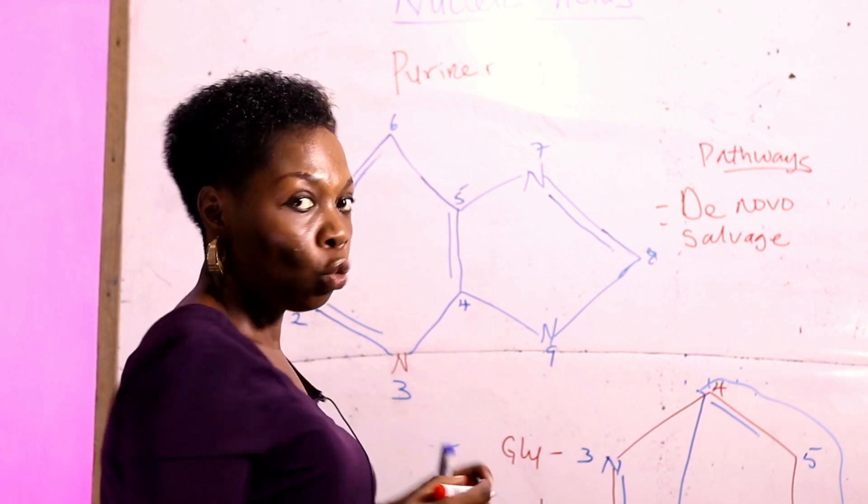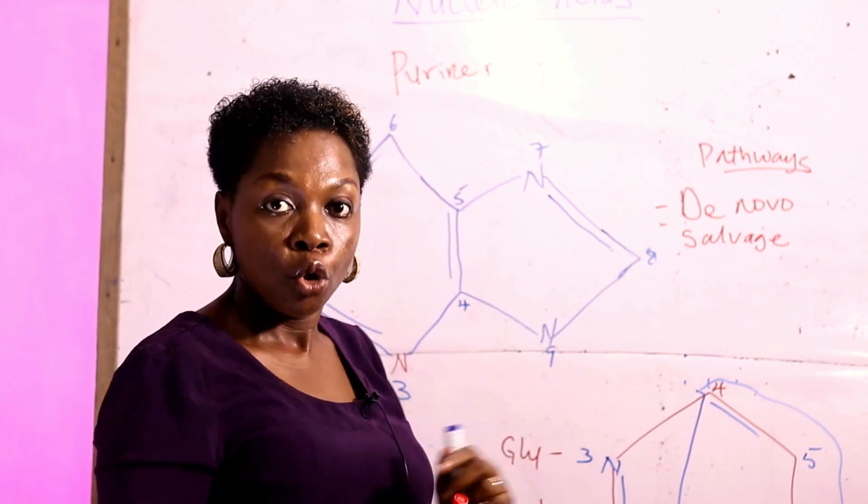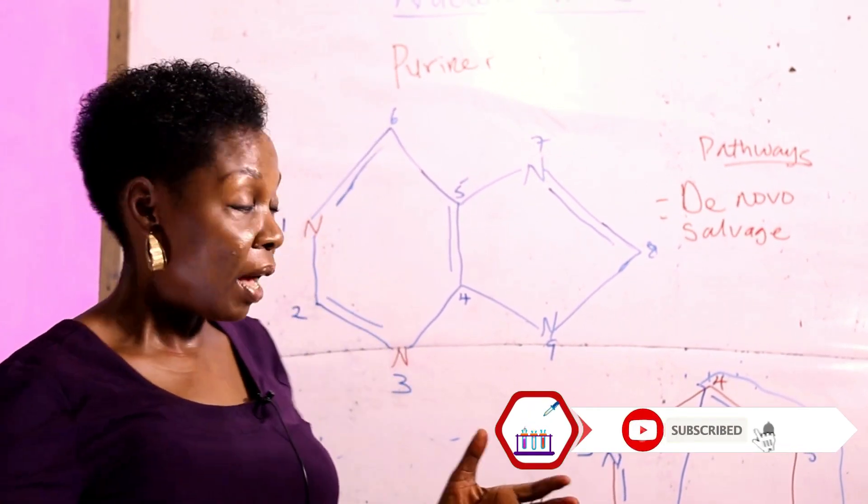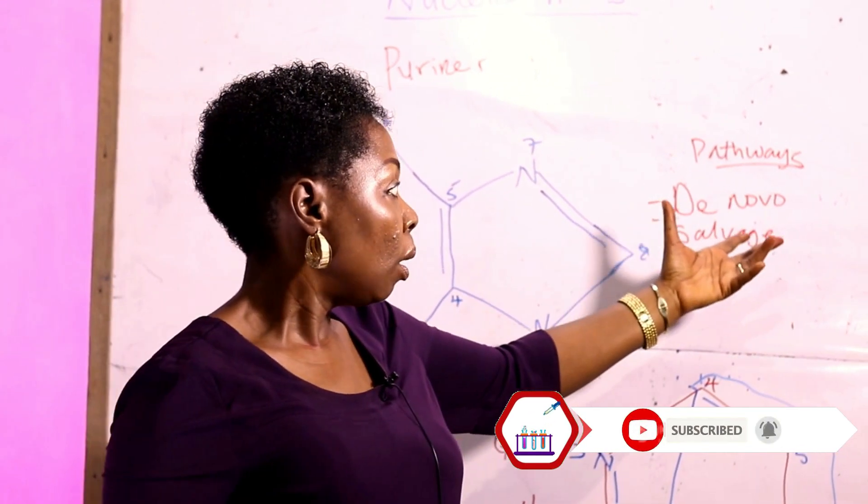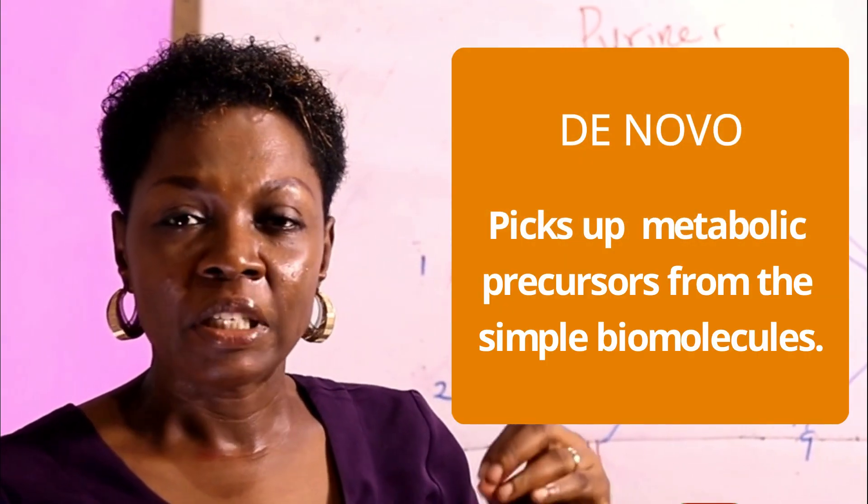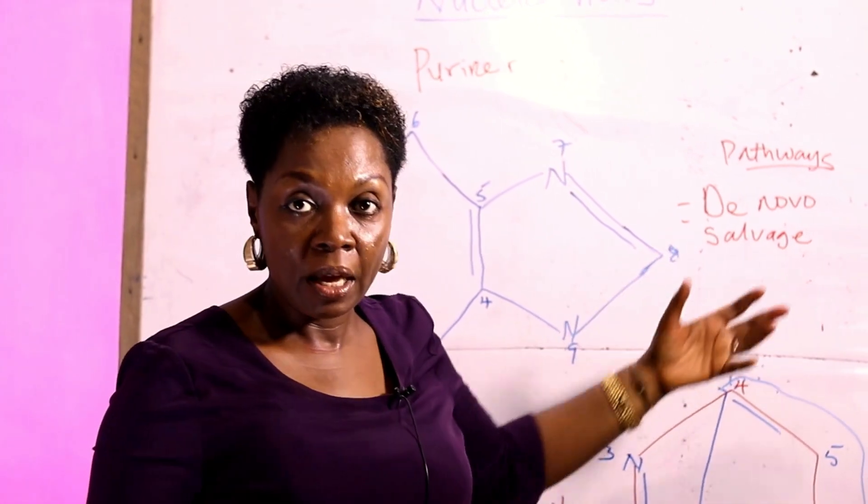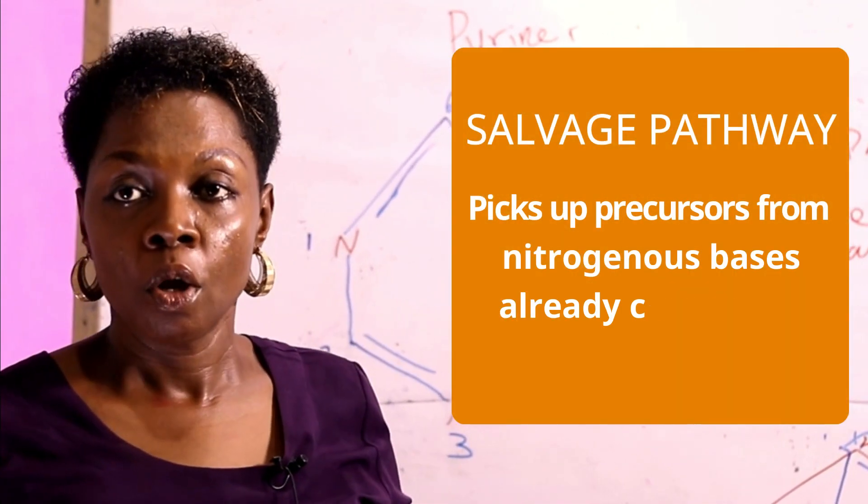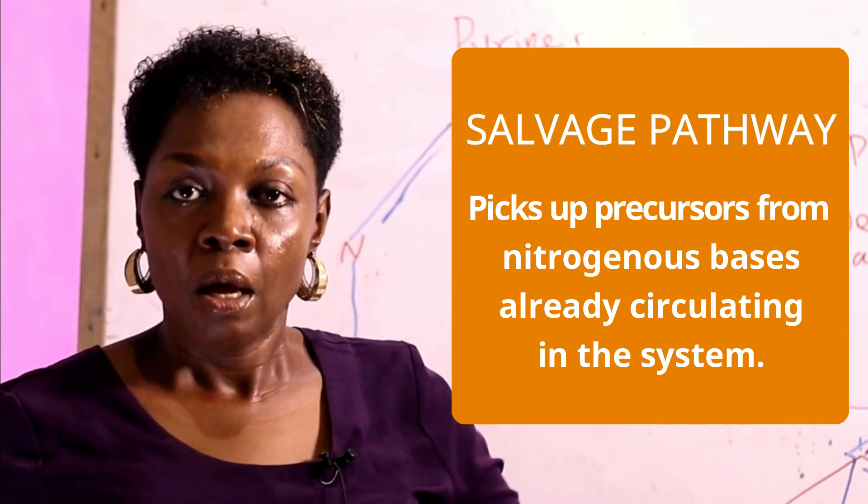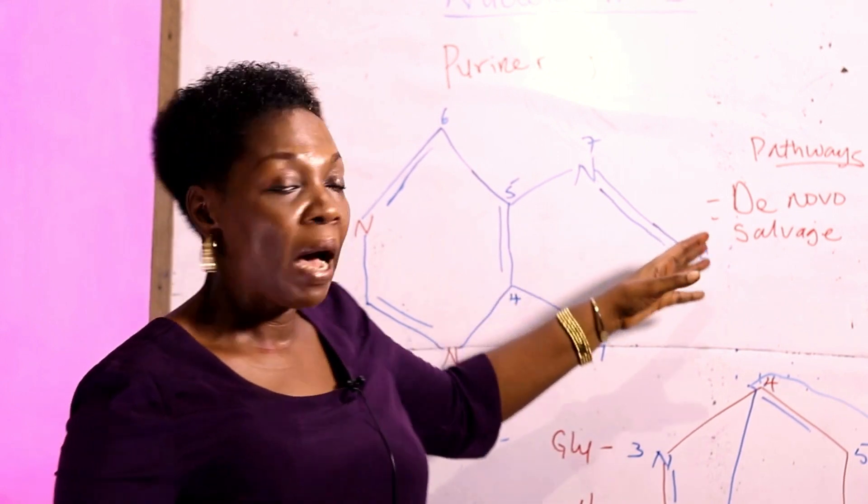These two major pathways are the route through which nucleotides are synthesized. The de novo picks up metabolic precursors from simple biomolecules, while the salvage pathway picks up precursors from nitrogenous bases already circulating in the system.